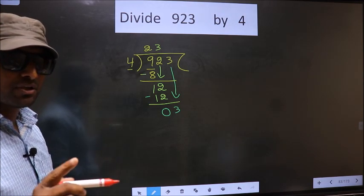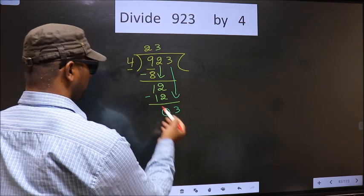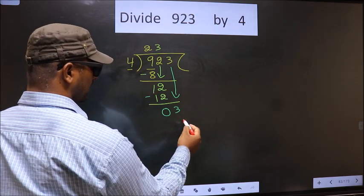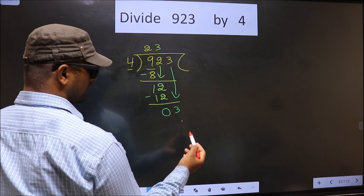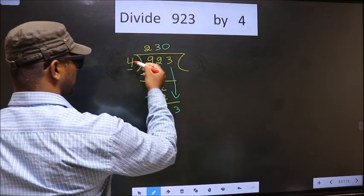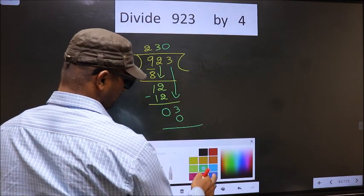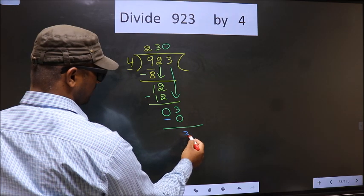Instead, what you should think of is, what number should we write here. If we write 4 here, that is larger than 3. So what we do is, we take 0 here. So 4 into 0, 0. Now you subtract. 3 minus 0, 3.